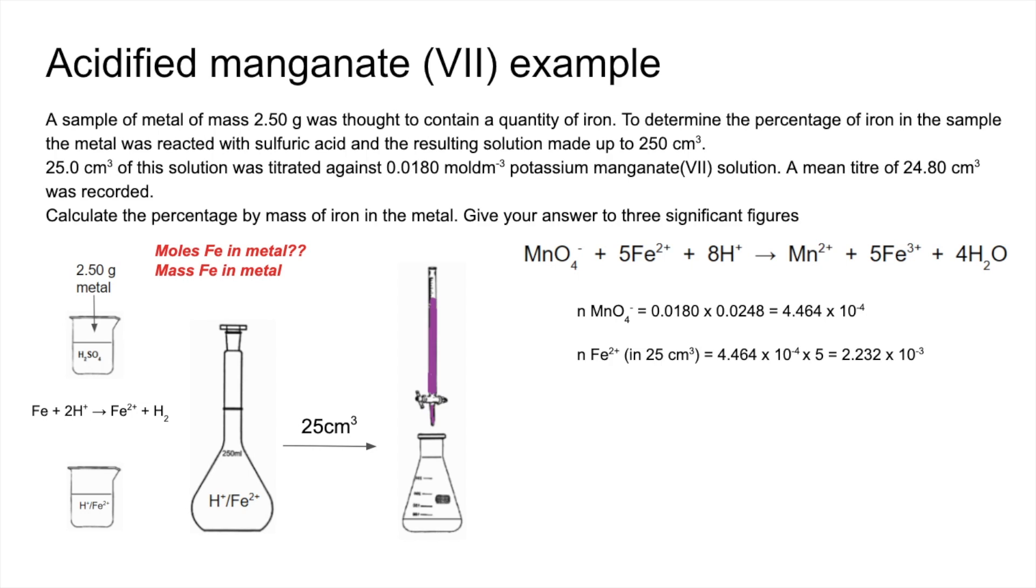Mole ratio gives us the moles of Fe2+ in the 25 cm³ used in the titration. So that's that there. In the 250 cm³ will be 10 times more, so we just multiply that by 10. Remember we said the moles in here are the same as the moles in there. So the moles of iron will be the same as well because of this one-to-one ratio here.